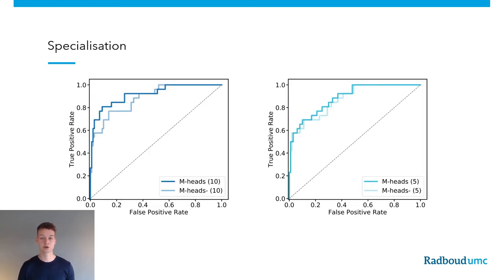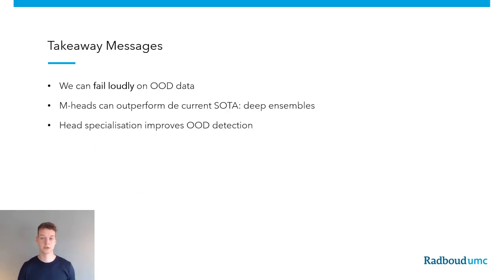We can also check the influence of training by distributing gradients for the multi-head model. Here we compare both training with and without distributing gradients for a multi-head model of both 5 or 10 heads. In both cases, we see improved out-of-distribution detection performance when distributing gradients, which shows the importance of this method.